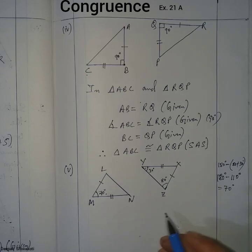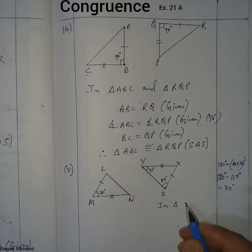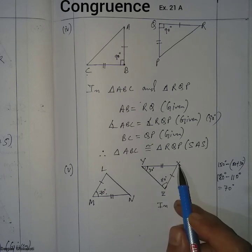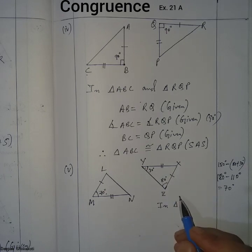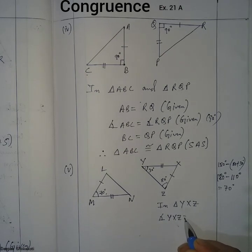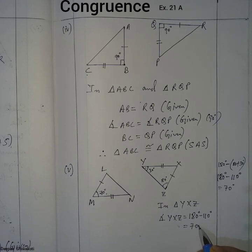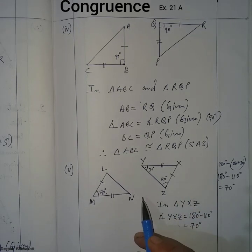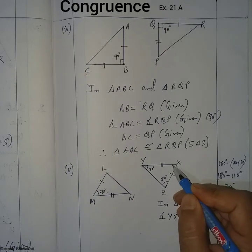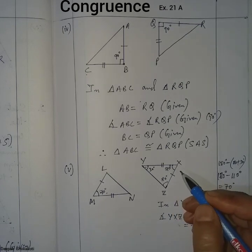So angle X is 70 degrees. In triangle YXZ, angle YXZ equals 180 minus 110, which is 70 degrees. Using this calculated angle, we can now show the two triangles are congruent.